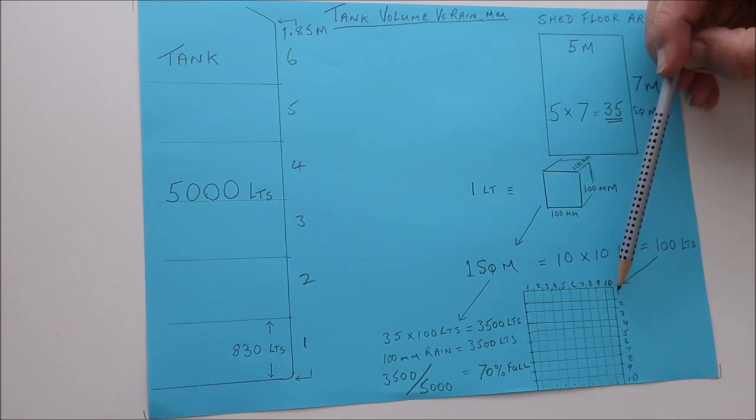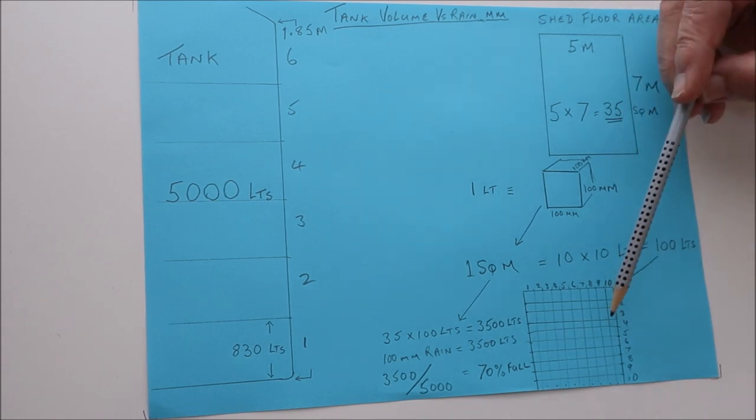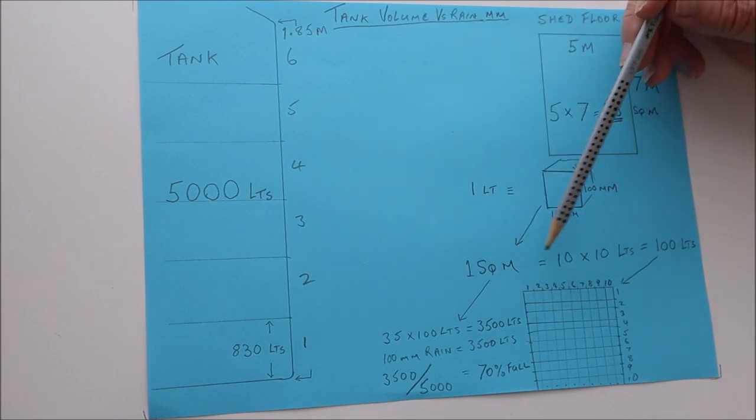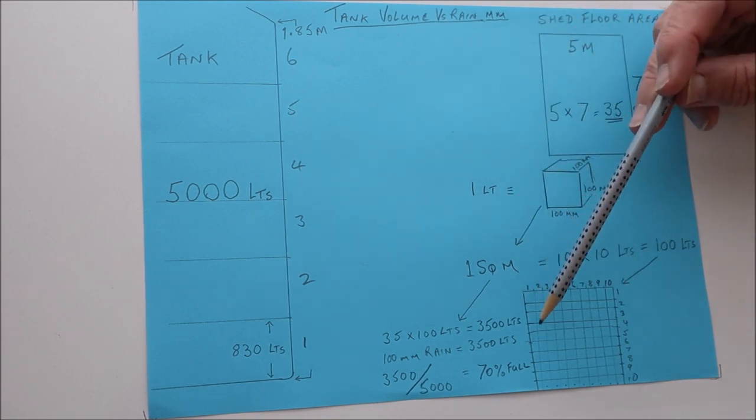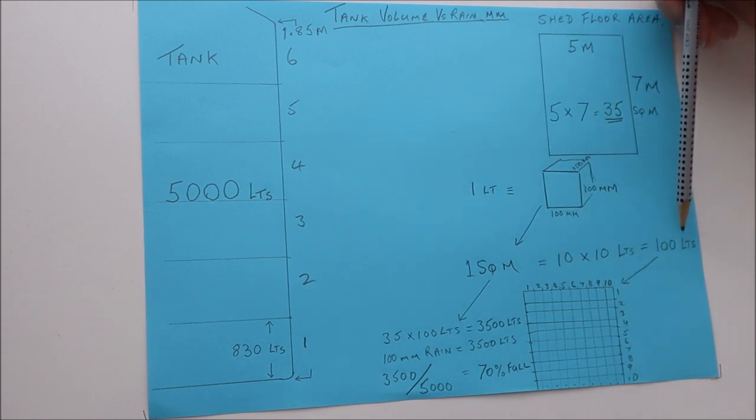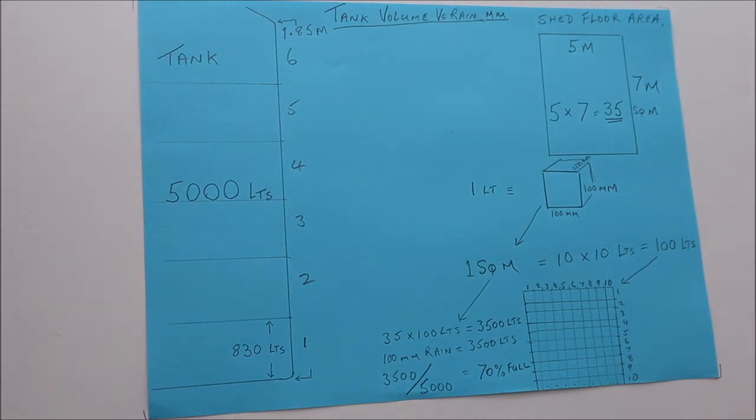We will need 100 millimeters of rain to raise the water level on that square meter by 100 millimeters. That gives us a starting point. For every 100 millimeters of rain on one square meter of area, we're going to get 100 liters. If we now extrapolate that and we say we've got 35 square meters, we times it by 100 liters and that gives us 3,500 liters for 100 millimeters of rain.